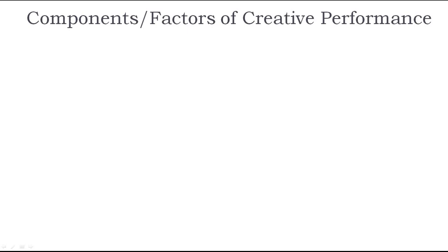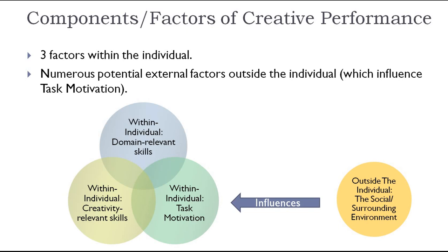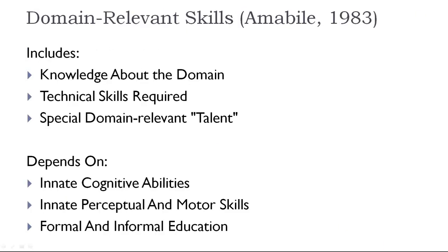Let us now spend some time to further analyse the components of creative performance. There are three primary components or factors of creative performance, and these factors are considered to occur within the individual: domain-relevant skills, task motivation, and creativity-relevant skills. In addition, there can be numerous potential external factors outside of the individual which can indirectly influence task motivation, such as the work environment, how the person is feeling, or many other potential factors. When the three factors within the individual are considered together, creativity is found at their intersection.